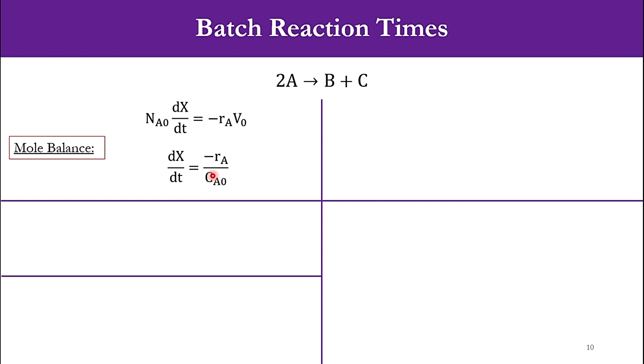The second step is the rate law. Accordingly, the rate law will be -RA equals kCA². Because we say that it is an elementary system and irreversible system, the equation will be written like that.